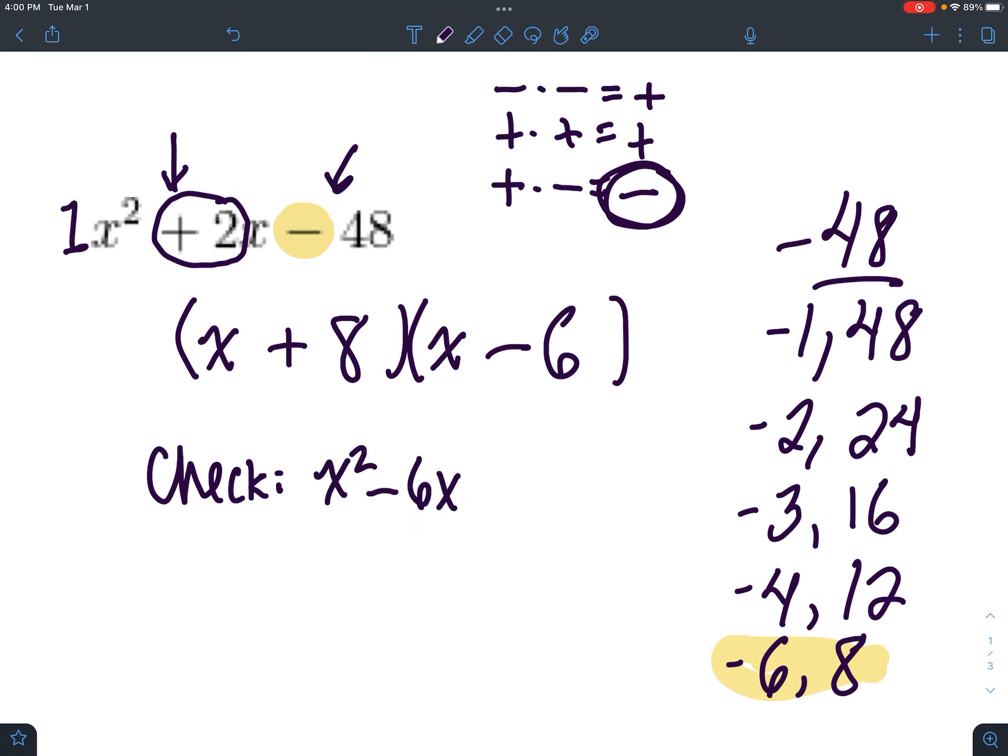So which one of those factor pairs adds to this one? So the 6 goes here and the 8 goes here. And that's it. Let's double check. x squared minus 6x plus 8x minus 48. That would be me doing this thing. Distributing. Is that right? Yeah. It's the same thing.